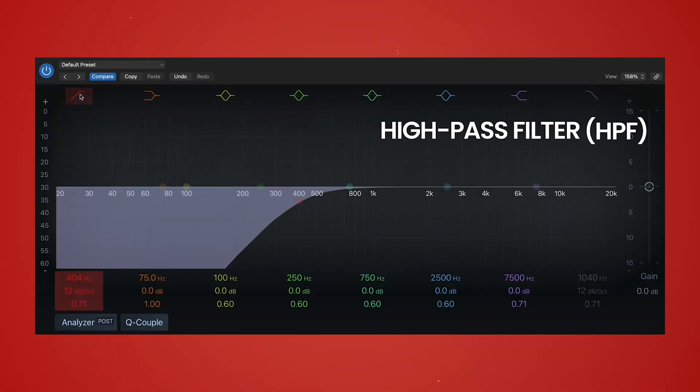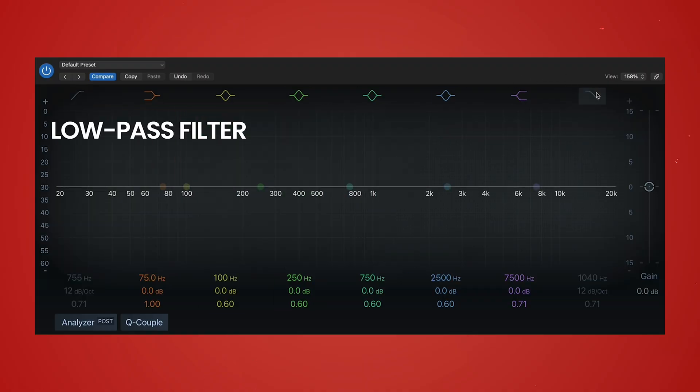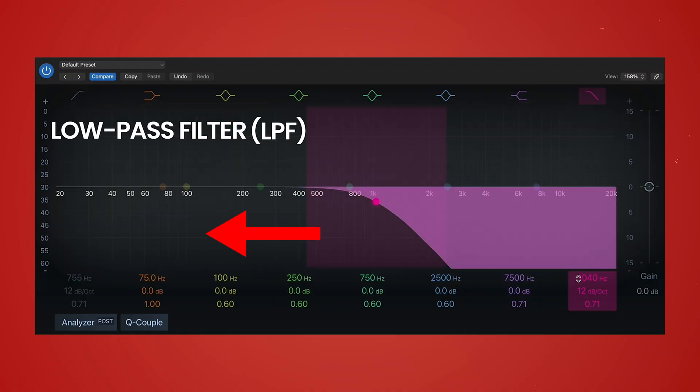Crossovers incorporate three types of filters. High pass filter or HPF where the frequencies above a designated crossover point are passed through. A low pass filter or LPF where the frequencies below a designated crossover point are passed through.